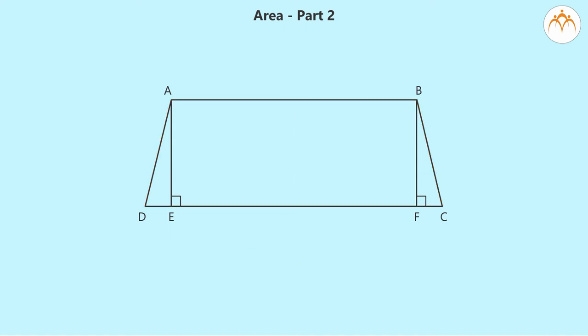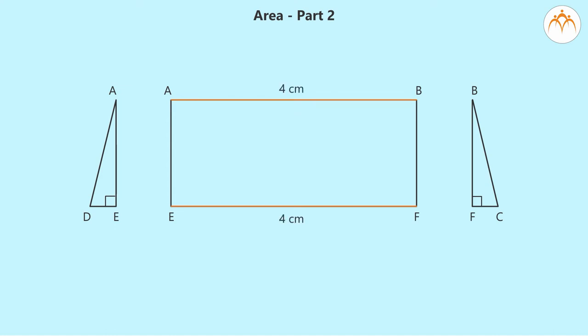Let us divide the trapezium into three regions: two right-angled triangles AED and BFC, and a rectangle AEFB. What will be the length of EF? It is equal to AB, that is 4 centimeters. The height is the distance between the parallels, that is 2 centimeters.